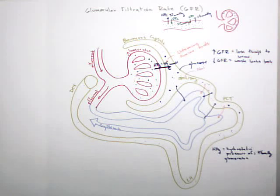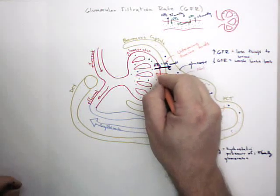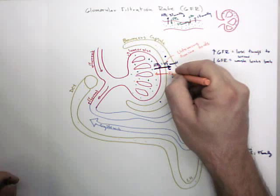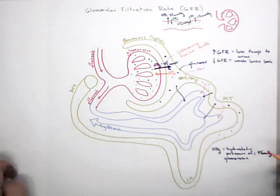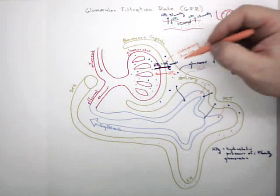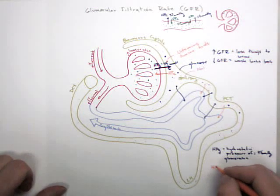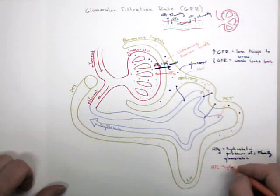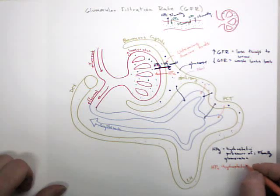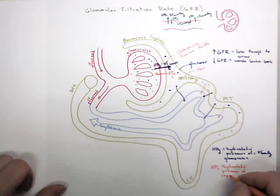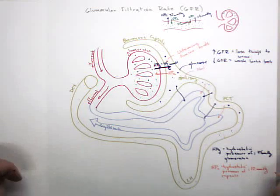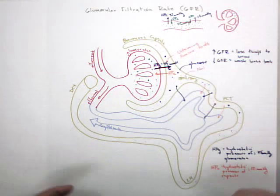There's a similar HP pressure that pushes back, and it's called HPC. Now up here the C stood for capillary. Down here it means capsule. So HPC equals hydrostatic pressure of the capsule. This is about 10 millimeters of mercury, and it's pushing the opposite direction of HPG.